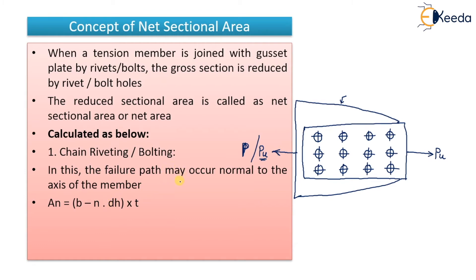N is the number of bolts in a single line. If you pull the plate in the load direction, the failure will occur along a single line. In case of chain bolting, you take only a single line. For example, if there are 3 bolts in a single line, then N equals 3.